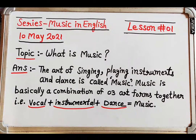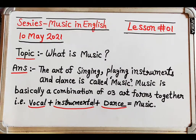So today we have talked about what is music. The art of singing, playing instruments, and dance — when these three different art forms come together as one unit, they are called music. It means that there are three elements in music: vocal, instrumental, and dance. This is music.